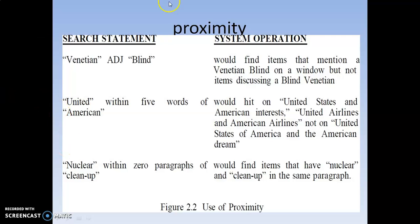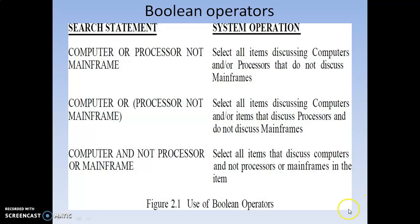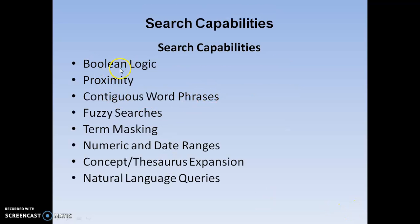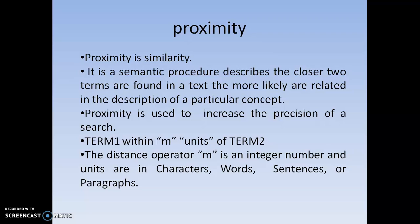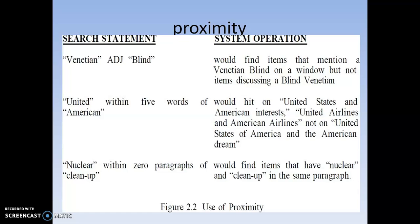Coming to the next example: 'nuclear WITHIN 0 paragraphs cleanup' — zero paragraphs means within the same paragraph only. The search will not be allowed in other paragraphs. It will find items that have 'nuclear' and 'cleanup' in the same paragraph. Likewise, we use proximity search in search capabilities. We have now completed two types: Boolean logic and proximity — where proximity is designed to increase precision.